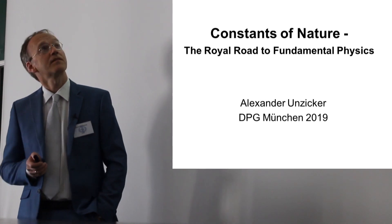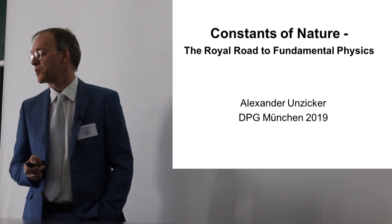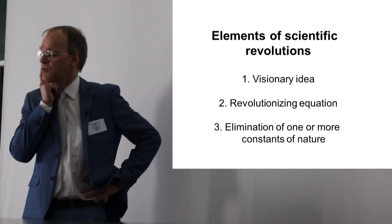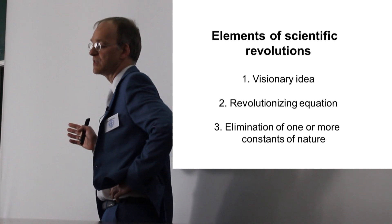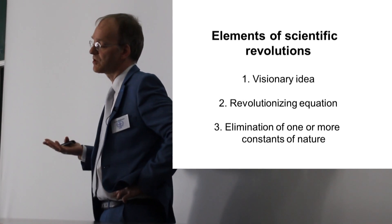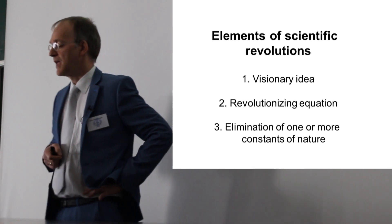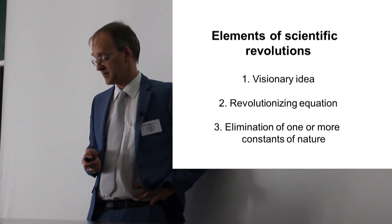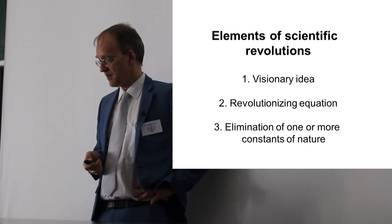As I explained yesterday in my talk about constants of nature, real progress in physics is always done by eliminating constants of nature. There is a general structure we can observe in the history of science. If you look at scientific revolutions, there is always a visionary idea, then a revolutionizing equation, and at the end you end up with one constant less.